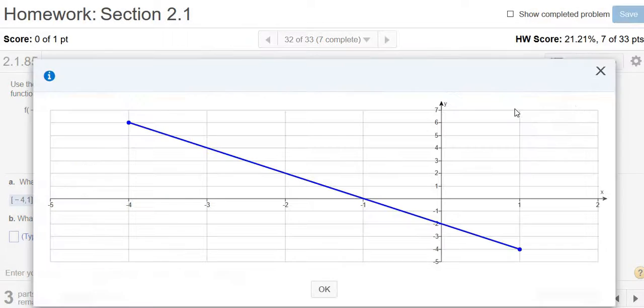The range is all the possible y values. The smallest y value in this case is negative 4, right here. That's the smallest y value, so negative 4 all the way to 6.